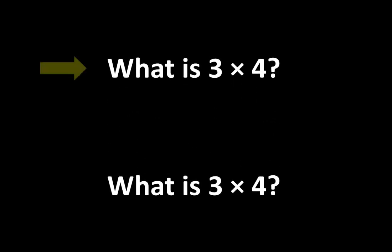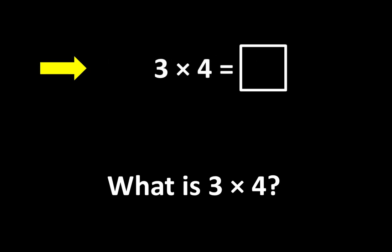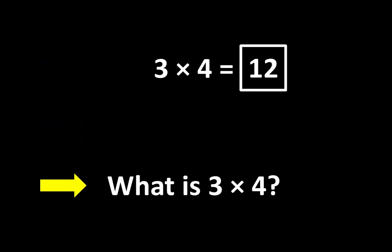When someone asks what is 3 times 4, what they might mean is: 3 times 4 is equal to what number? The answer to that question is 12. 3 times 4 is equal to 12, and that is an important idea to learn, but they may also know that there are many other important ideas.